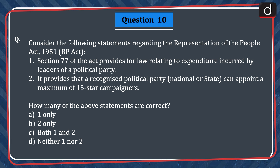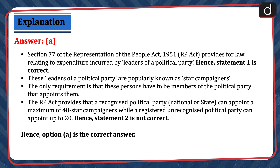Last question: consider the following statements regarding the Representation of the People Act, 1951. 1. Section 77 of the Act provides for law relating to expenditure incurred by leaders of a political party. 2. It provides that a recognized political party, national or state, can appoint a maximum of 15 star campaigners. How many of the above statements are correct? 1 only, 2 only, both 1 and 2, or neither 1 nor 2? The correct answer is option A, 1 only. Section 77 of the Representation of the People Act, 1951 provides for law relating to expenditure incurred by leaders of a political party, popularly known as star campaigners. The RP Act provides that a recognized political party, national or state, can appoint a maximum of 40 star campaigners, while a registered unrecognized political party can appoint up to 20. Hence, statement 2 is not correct, and option A is the correct answer.